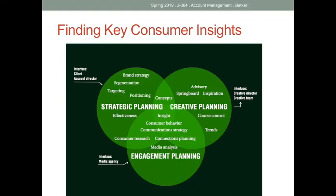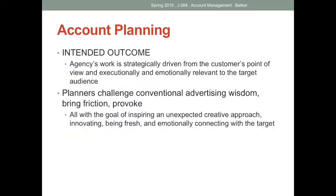This eye chart is really about what a competent account planner might think about a given client. There are three concentric circles, and in the center is the insight — the consumer behavior and communication strategy waiting to be discovered. It starts with strategic planning — all the brand strategies the client might be focused on — then creative planning, and at the bottom, engagement planning — the media agency strategy. All three circles roll up to the middle: the insight is what we're looking for. The intended outcome comes back to the consumer's point of view — executionally and emotionally, it's got to be relevant to the target audience.